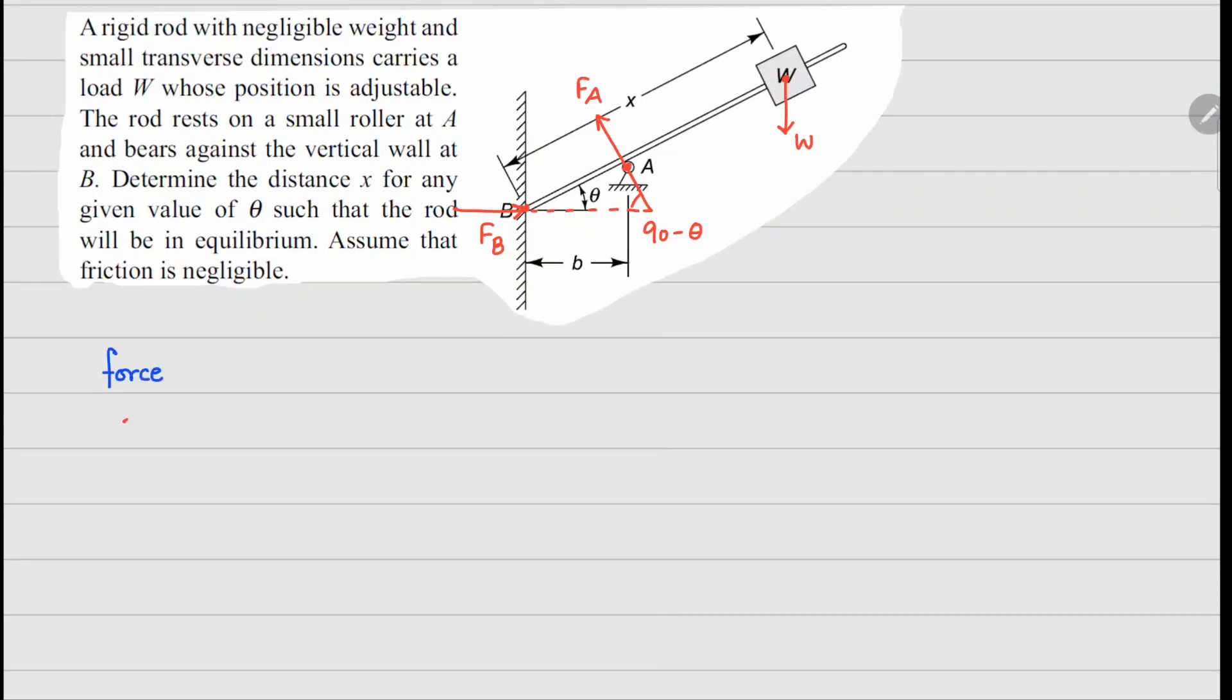In terms of forces, if you look at x forces, we have FB going to the right, then we have minus FA. The component that's going to go negative is sine theta because the angle is 90 minus theta, equals zero.